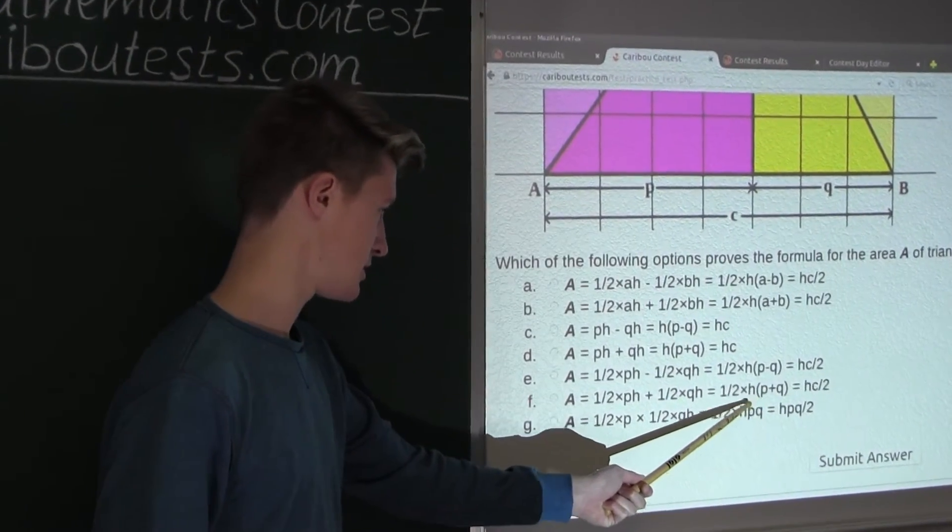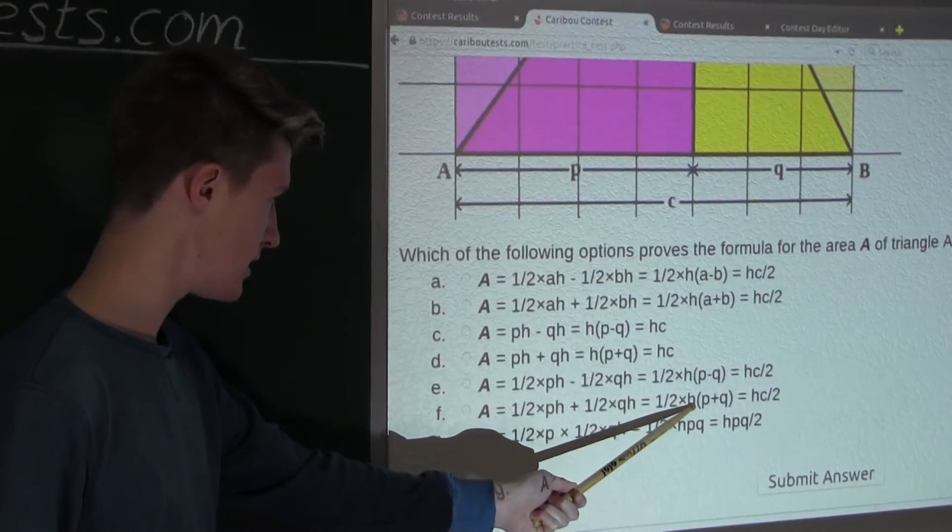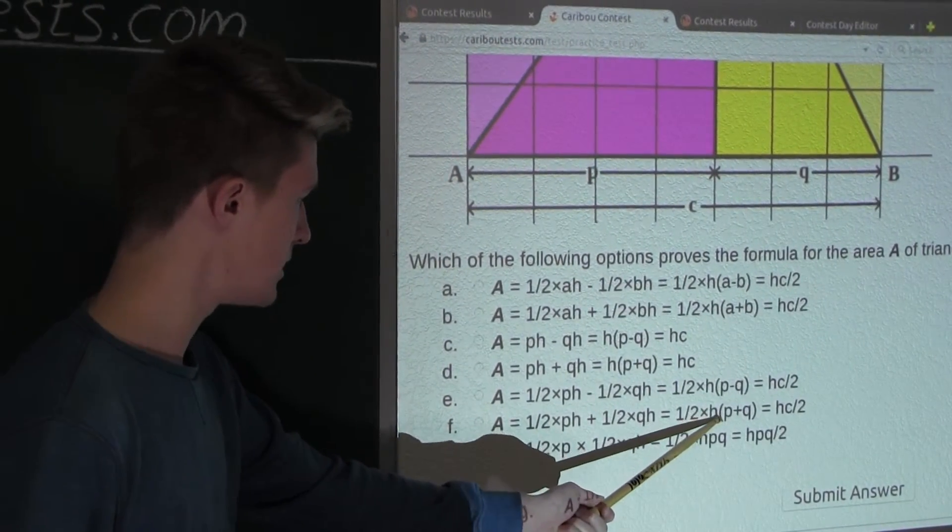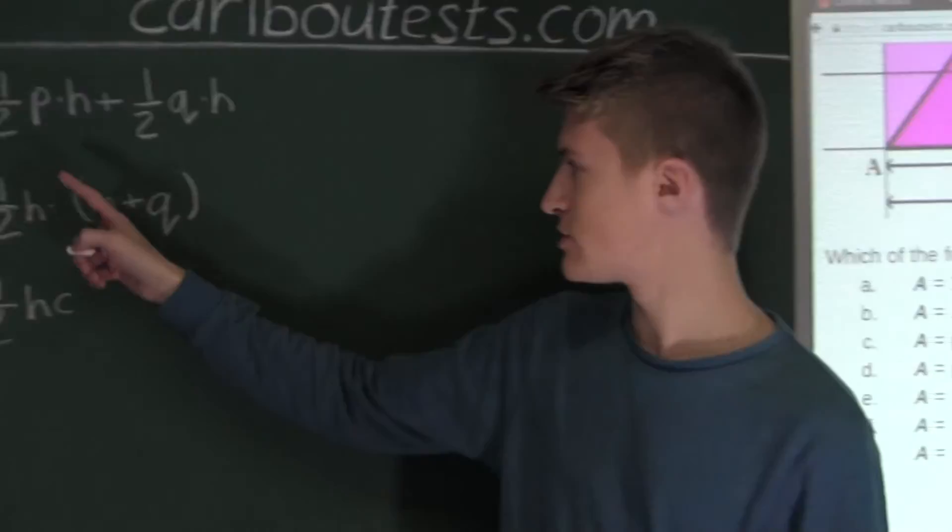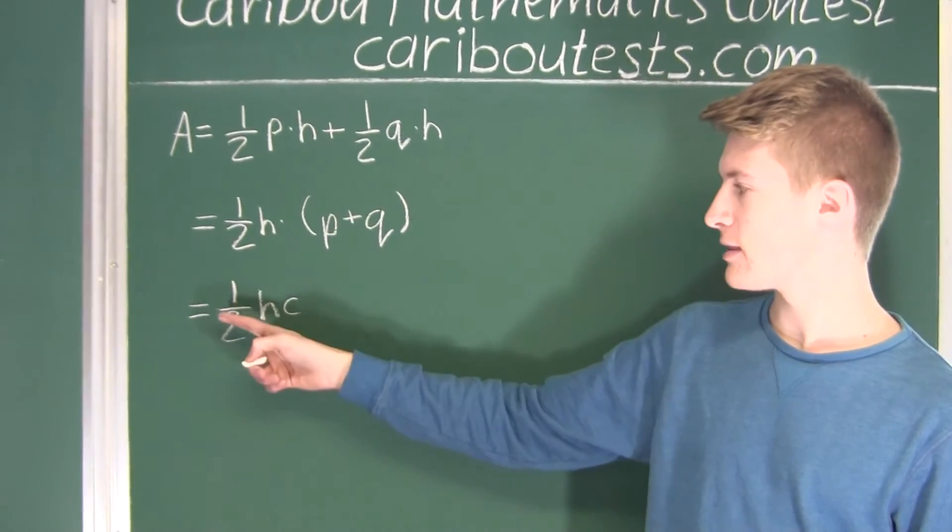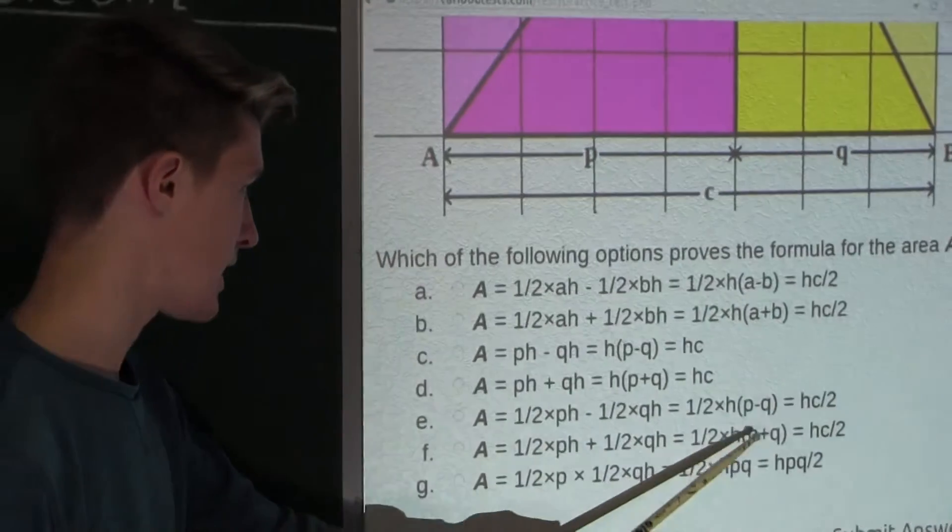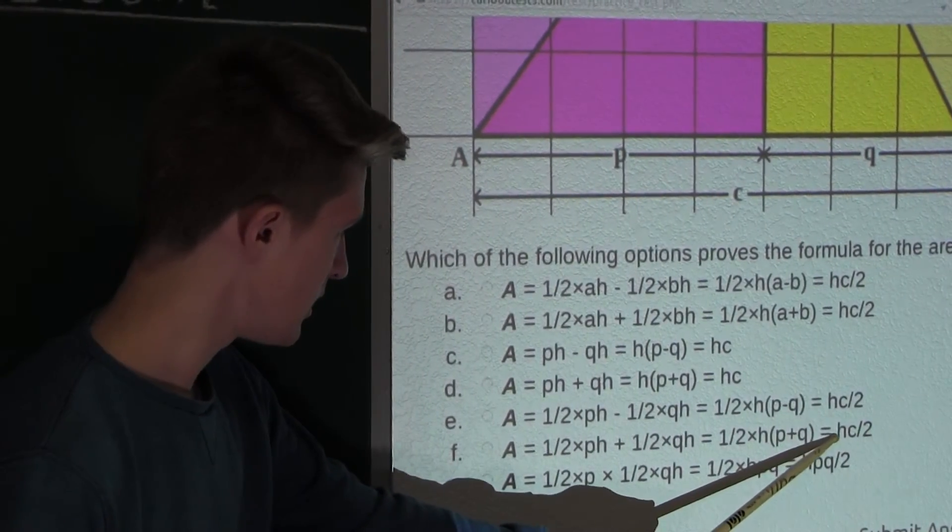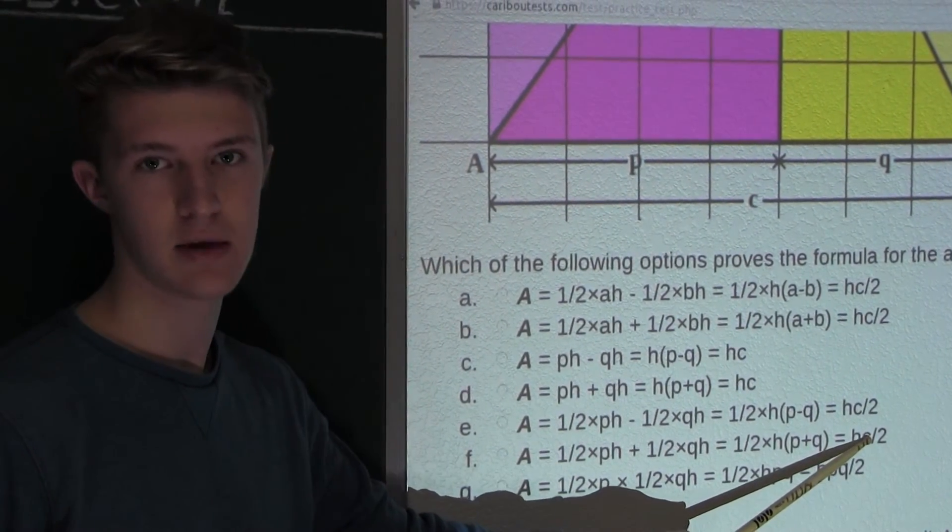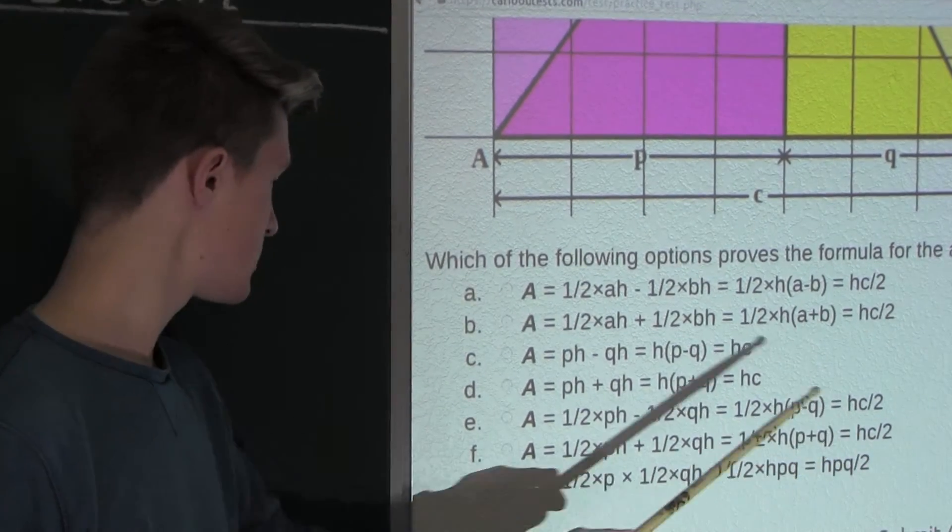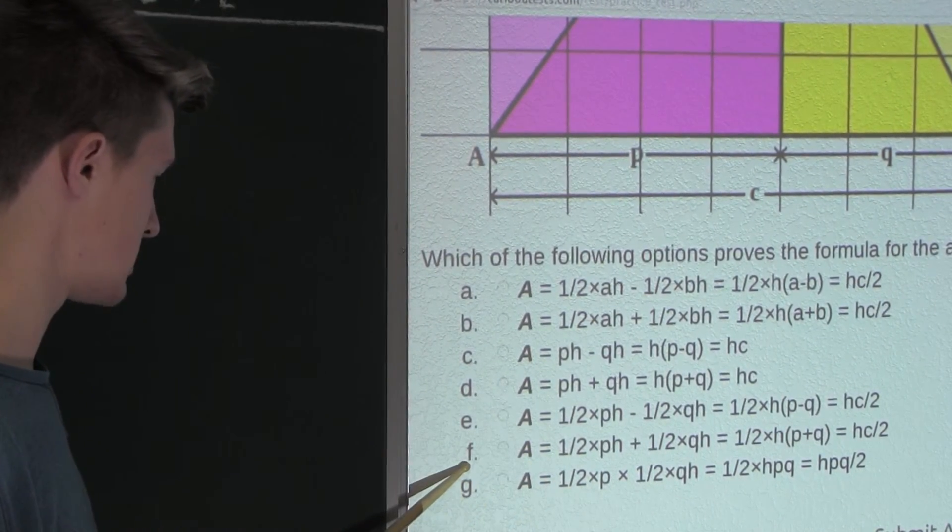well, what we did with the distributive law is a half times H and then multiplied by P plus Q, as we have shown here. And then finally, we have equals 1 over 2 H-C. And here we have, at the end, H-C over 2, which is the same thing as 1 over 2 H-C. So therefore, we know the correct option must be F.